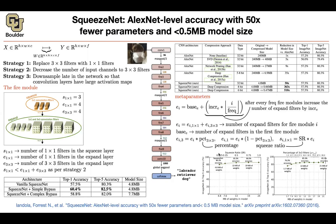These meta parameters let you control the size of your model — for example, 4.8MB, 13MB, or 19MB — allowing you to choose a model appropriate for your target device. Changing the squeeze ratio SR on the left figure and the percentage of 3x3 filters on the right figure both affect model size and accuracy. Increasing model capacity yields higher accuracy.